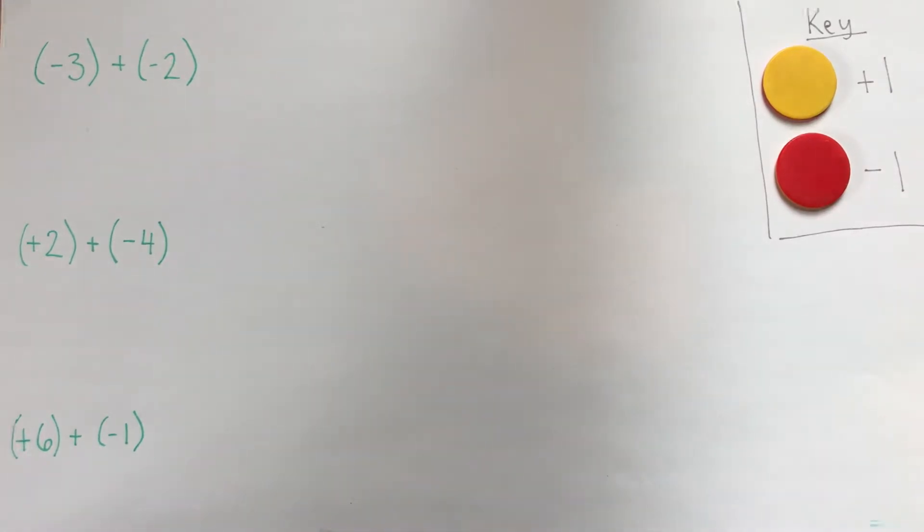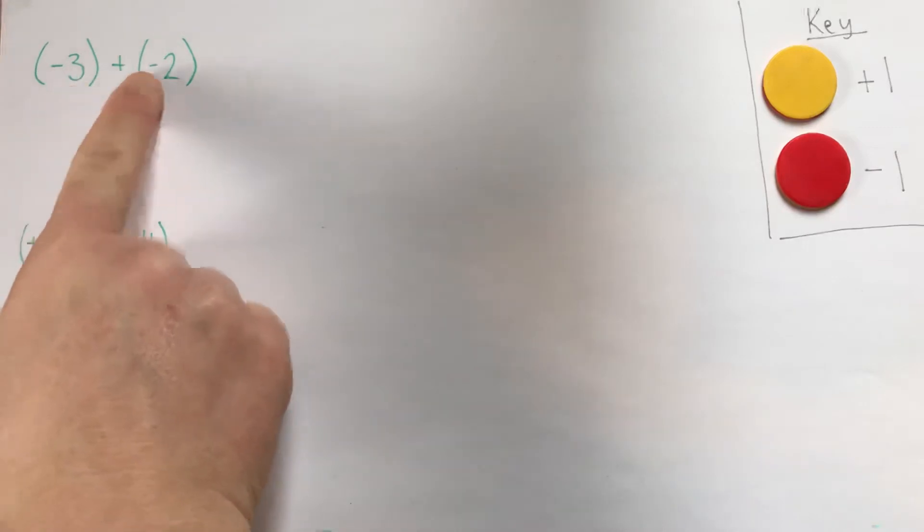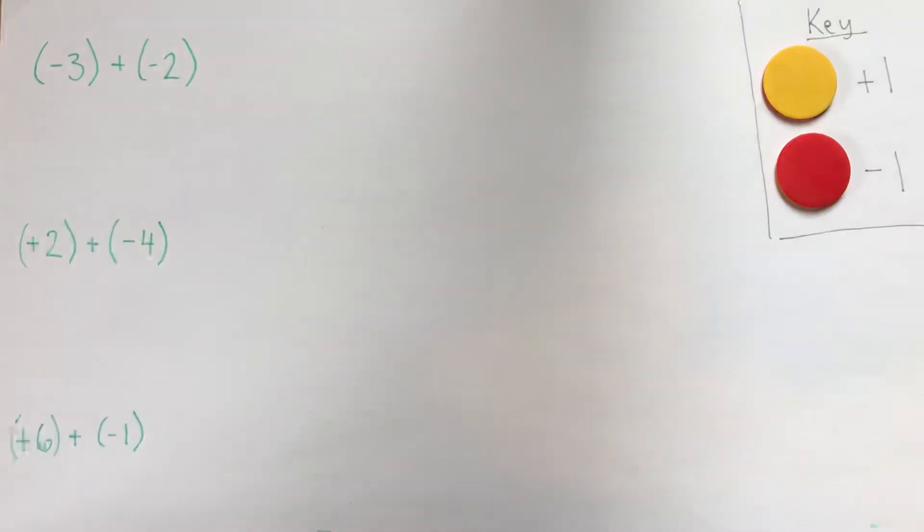The way that we add integers is we represent each number with the counters, and then we smush them together. Then we read the number that we get. Sometimes it's straightforward to read it, and sometimes we have to think about our zero pairs.